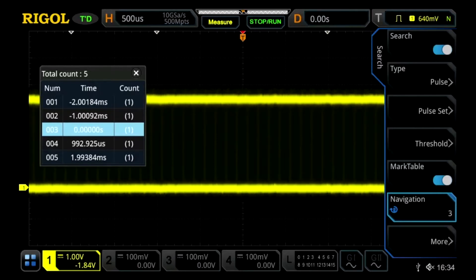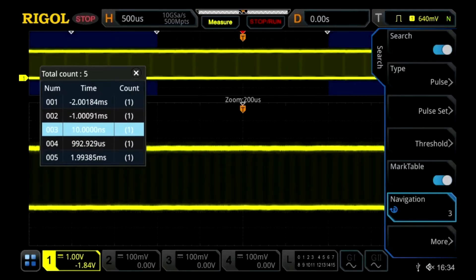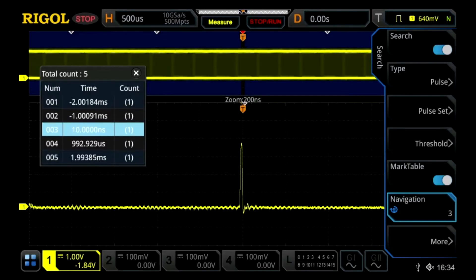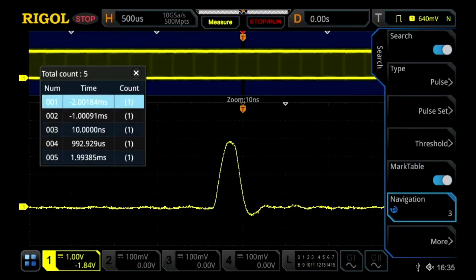We can highlight the one of interest and then go ahead and zoom in on those. And with the extra sample rate and additional memory, we can zoom in even further and look closely at those signals of interest.